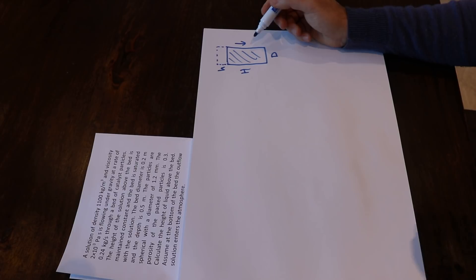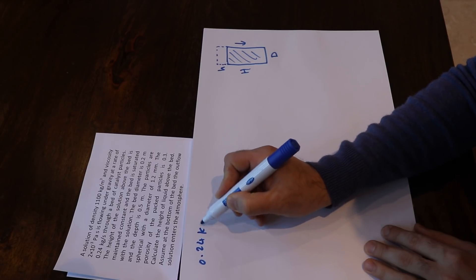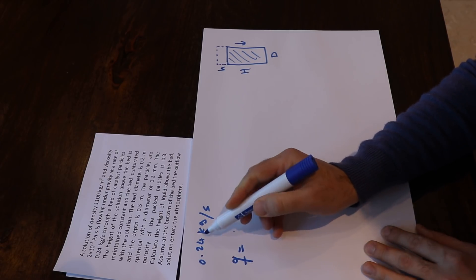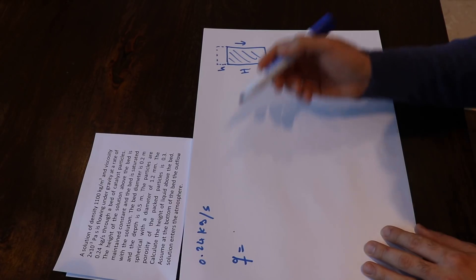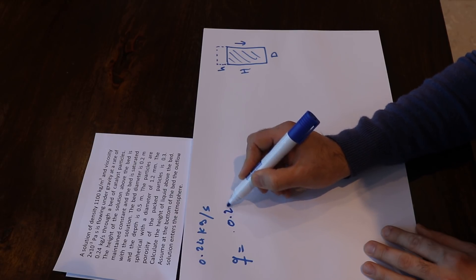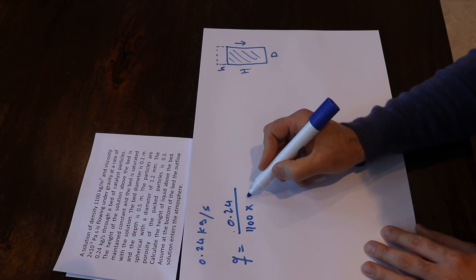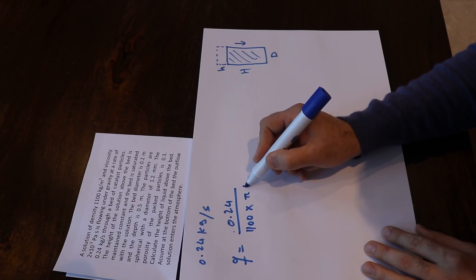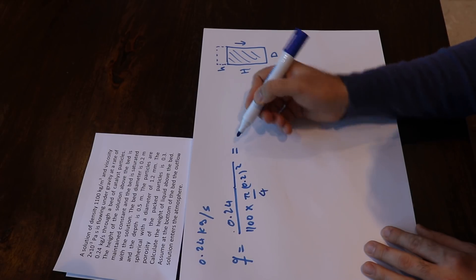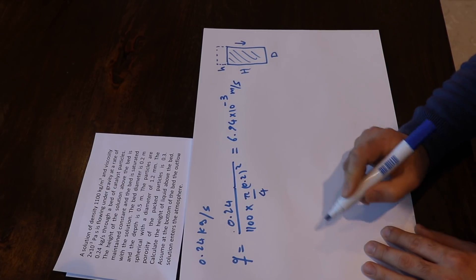First, calculate the Darcy (superficial) velocity. The mass flow rate is 0.24 kg/s, so to convert to m/s divide by density times cross-sectional area: Q = 0.24 / (1100 × π × 0.2² / 4), giving a Darcy velocity of 6.94×10⁻³ m/s.